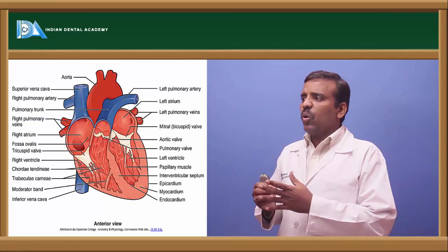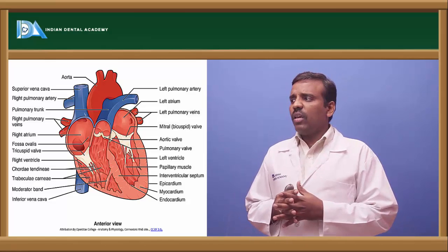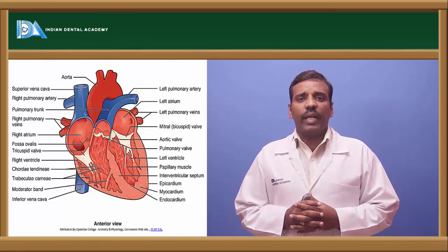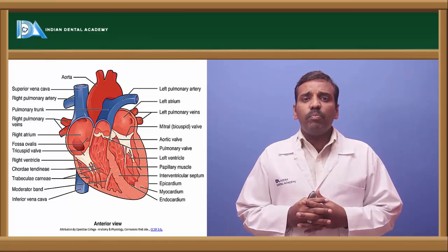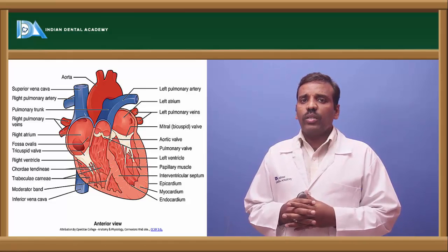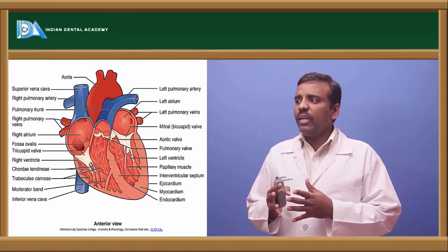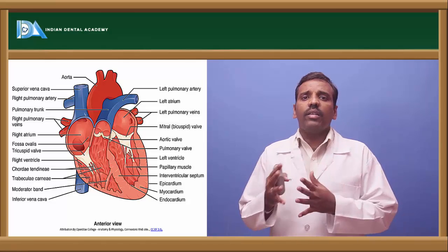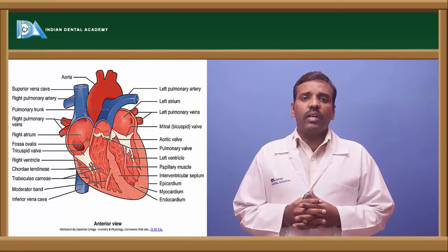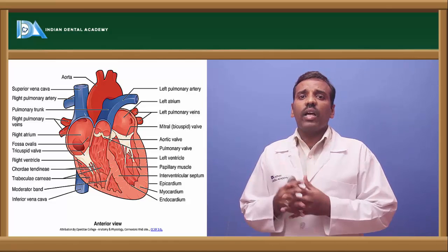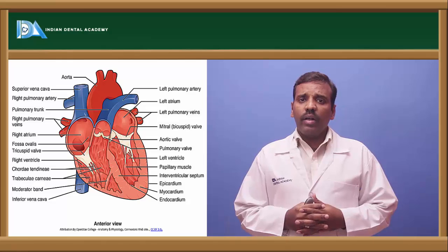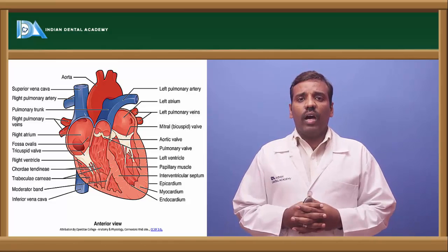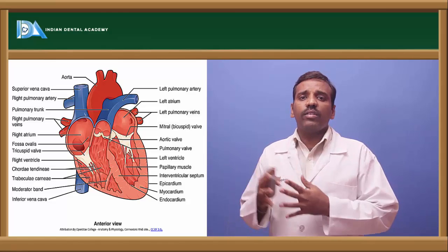The innermost layer is called the endocardium — pericardium, myocardium, and endocardium. In this diagram, the blue-colored vessels are the veins, the red-colored ones are the arteries, and the pale pink color represents the inner parts of the heart. The right side of the heart pumps impure blood, and the left side of the heart pumps pure blood. Impure blood is transported to the lungs from the heart.